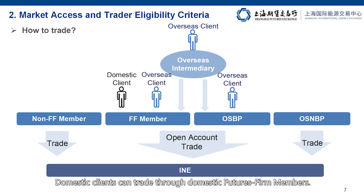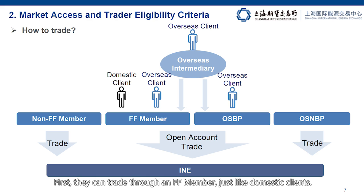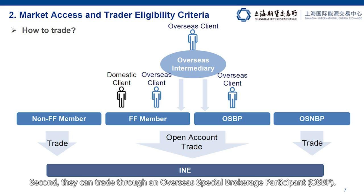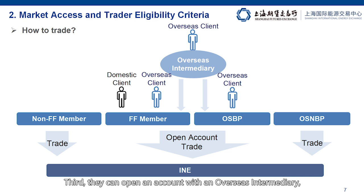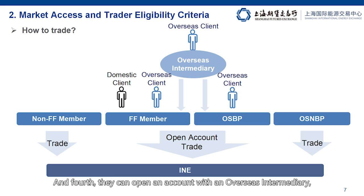Domestic clients can trade through domestic futures firm members. Overseas clients have four options. First, they can trade through an FF member, just like domestic clients. Second, they can trade through an overseas special brokerage participant, or OSBP. Third, they can open an account with an overseas intermediary, who in turn will work with an FF member. And fourth, they can open an account through an overseas intermediary, who then engages an OSBP.